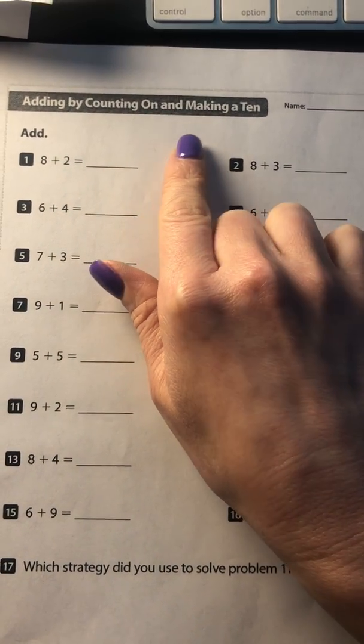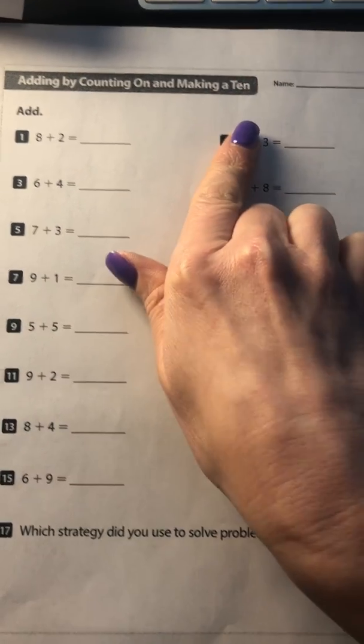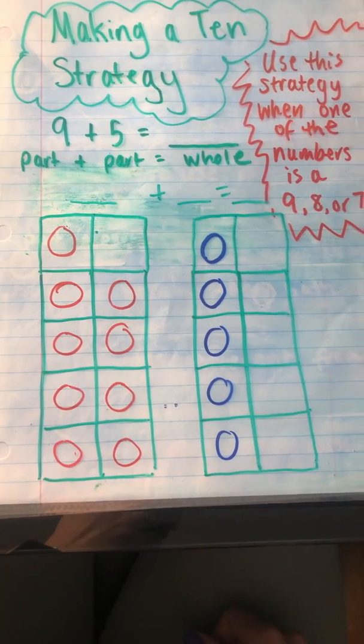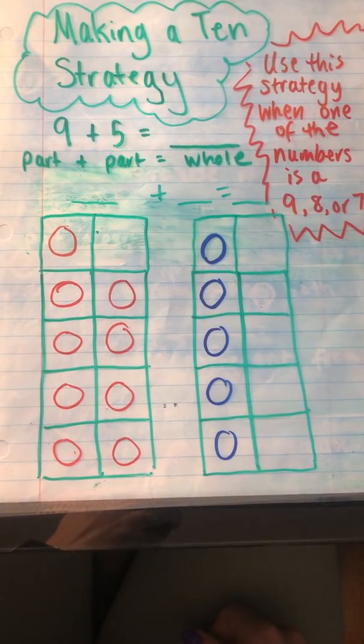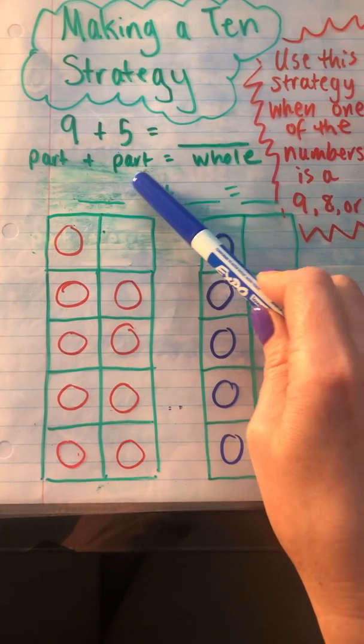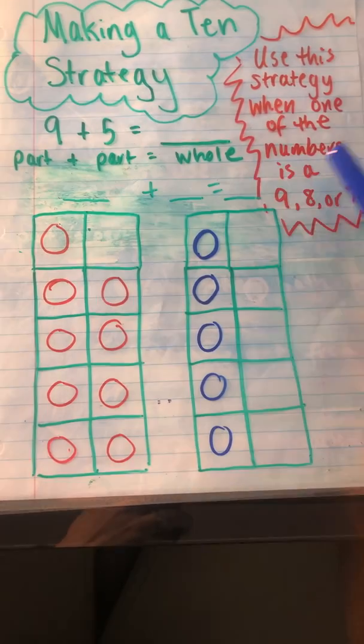So the strategy is adding by counting on and adding by making a 10. First, I'm going to show you the strategy of making a 10.